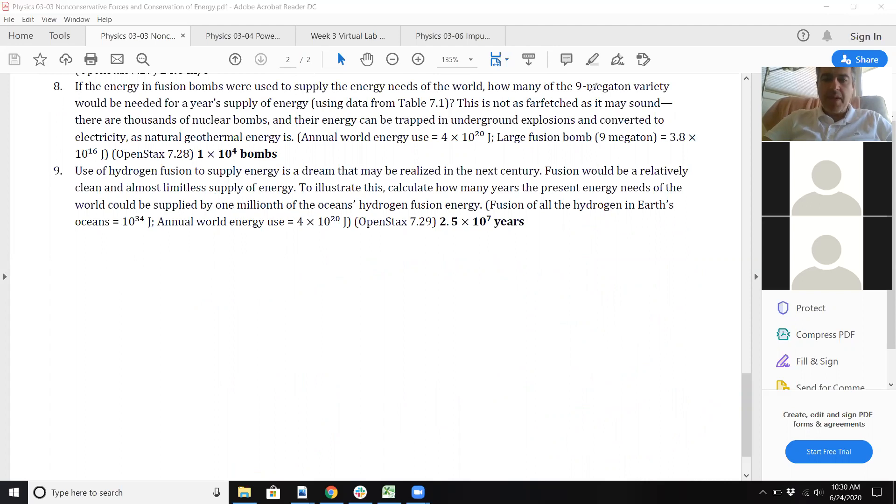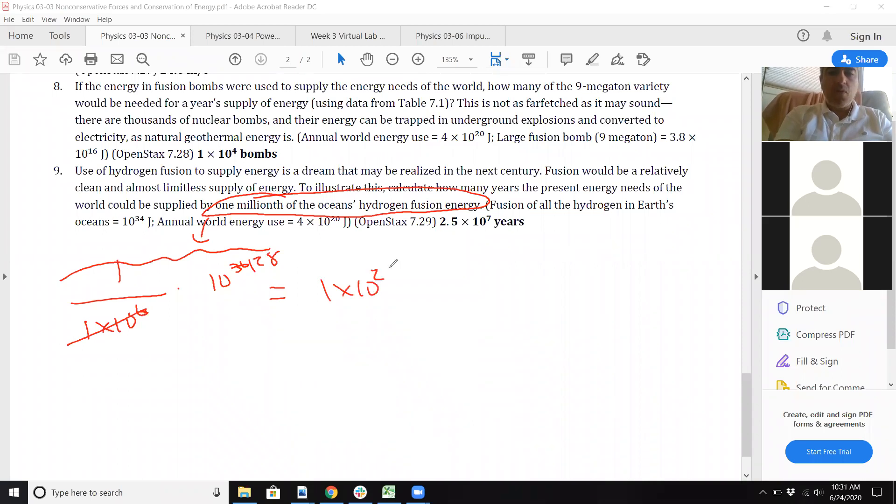So now for number nine. How many years of present energy needs could be supplied by one millionth of the hydrogen fusion? So you only need a fraction of it—not even half, way less than half, right? So you only need a small part of it. So that's what I'm calculating right now. And actually, you can see that these kind of reduce like that. So that's how much we'd be using.